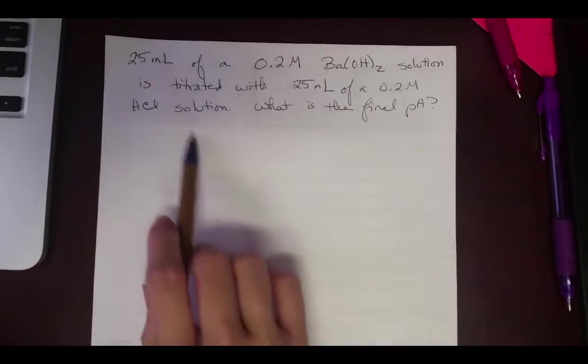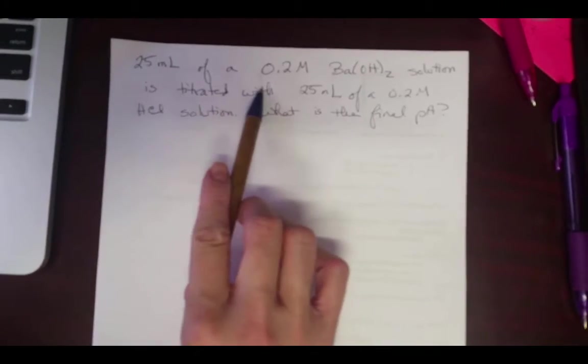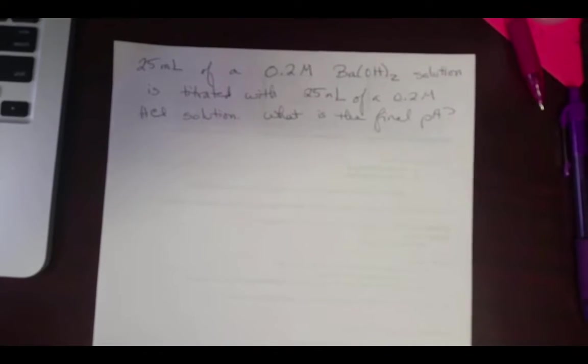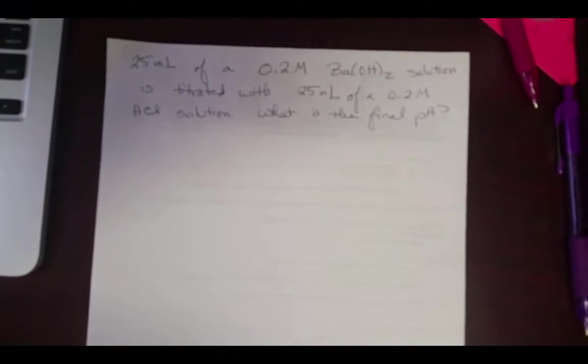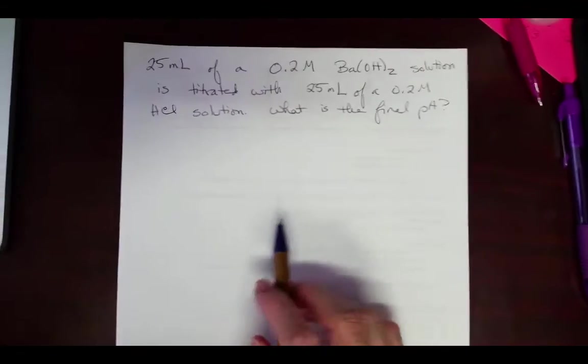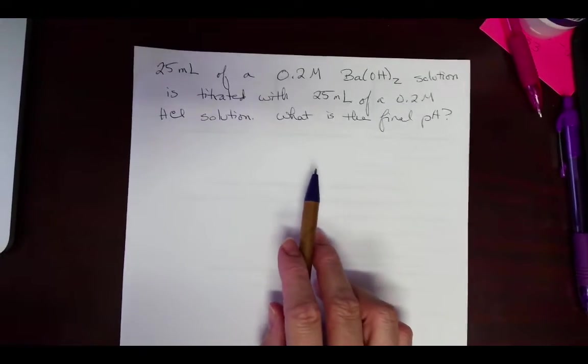So it's really tempting to look at this and say, 25 milliliters, 0.2 molar, 25 milliliters, 0.2 molar. Wait a minute, I know what to do. This is obviously at the equivalence point, clearly, obviously. So we're not actually at the equivalence point, really tempting, but not true.